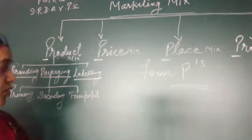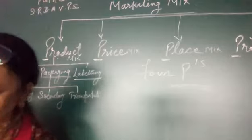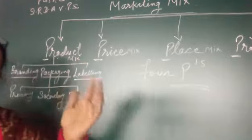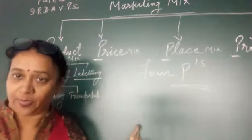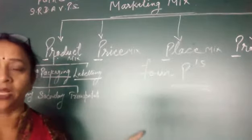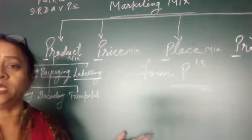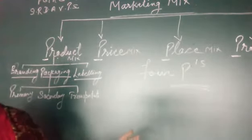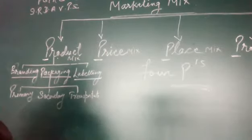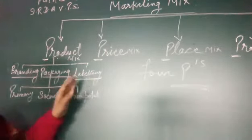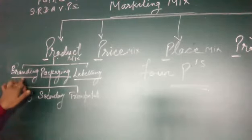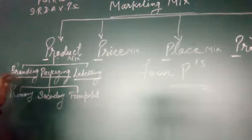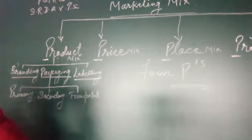Next is trademark. When we register our brand mark and give it legal protection so that no other producer can use the same mark, it becomes a trademark. So when a brand mark is legally registered, it becomes a trademark. That was all about branding — how we decide a product's brand name.